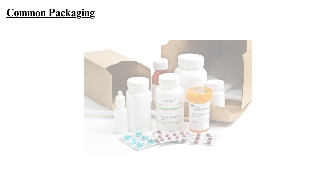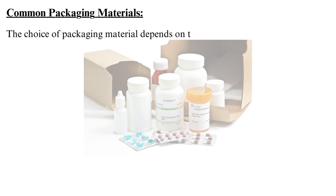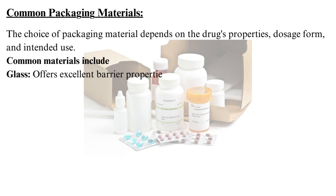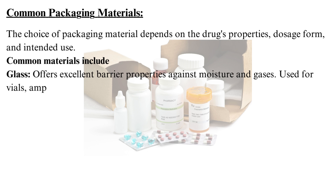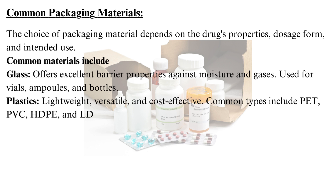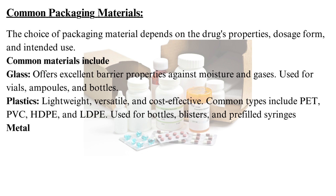Common packaging materials: the choice of packaging material depends on the drug's properties, dosage form, and intended use. Glass offers excellent barrier properties against moisture and gases, and is used for vials, ampoules, and bottles. Plastics are lightweight, versatile, and cost-effective; common types include PET, PVC, HDPE, and LDPE, used for bottles, blisters, and pre-filled syringes.